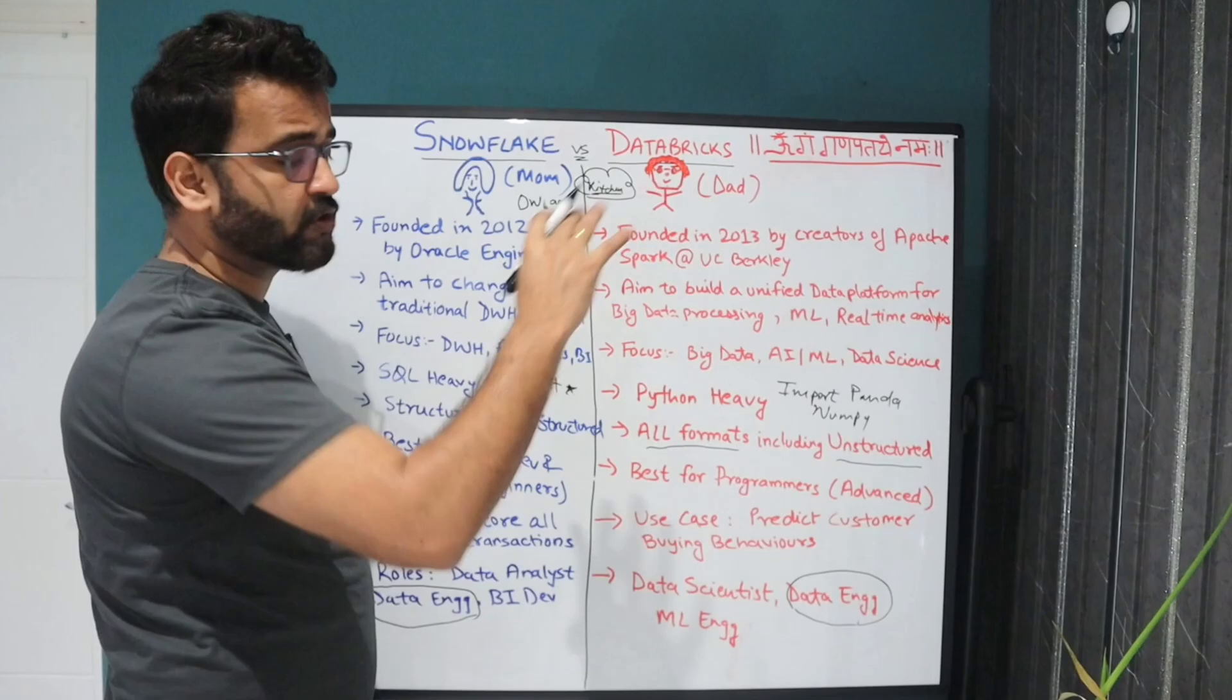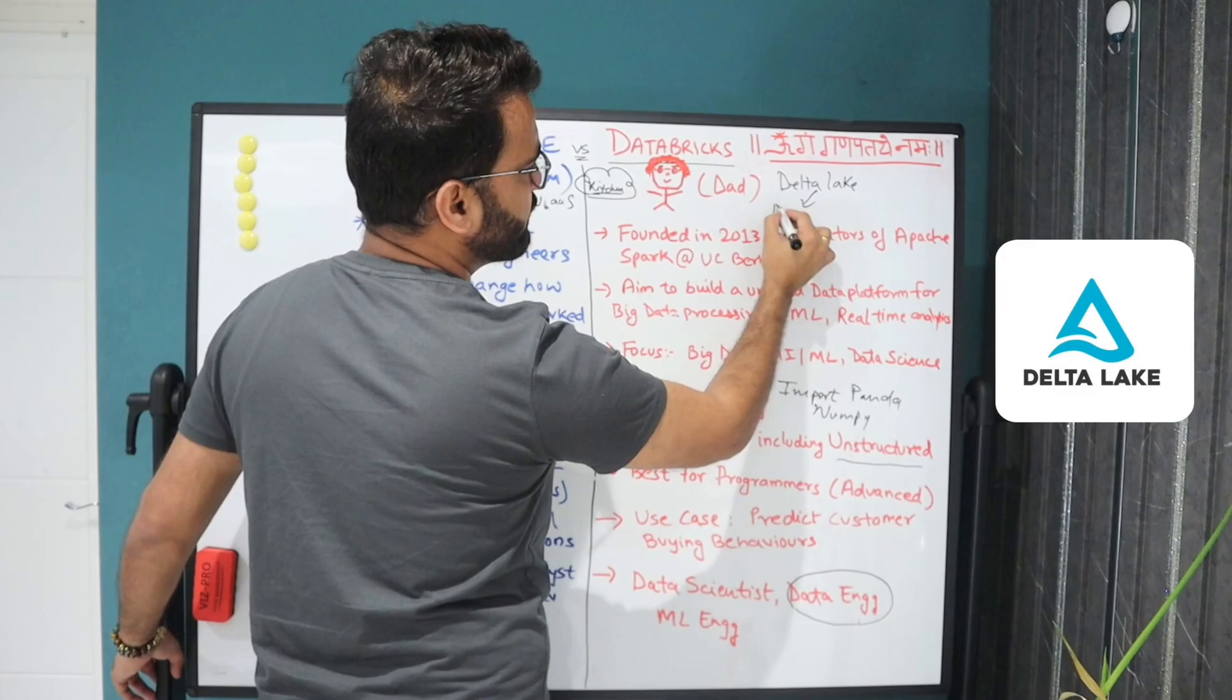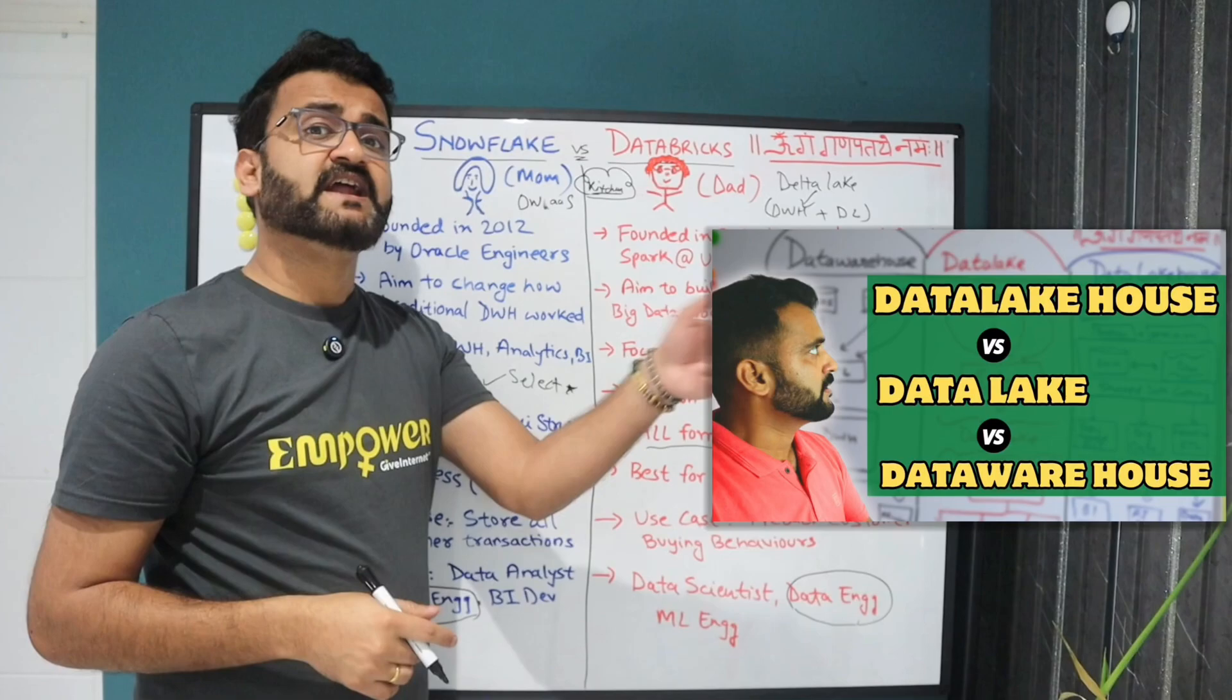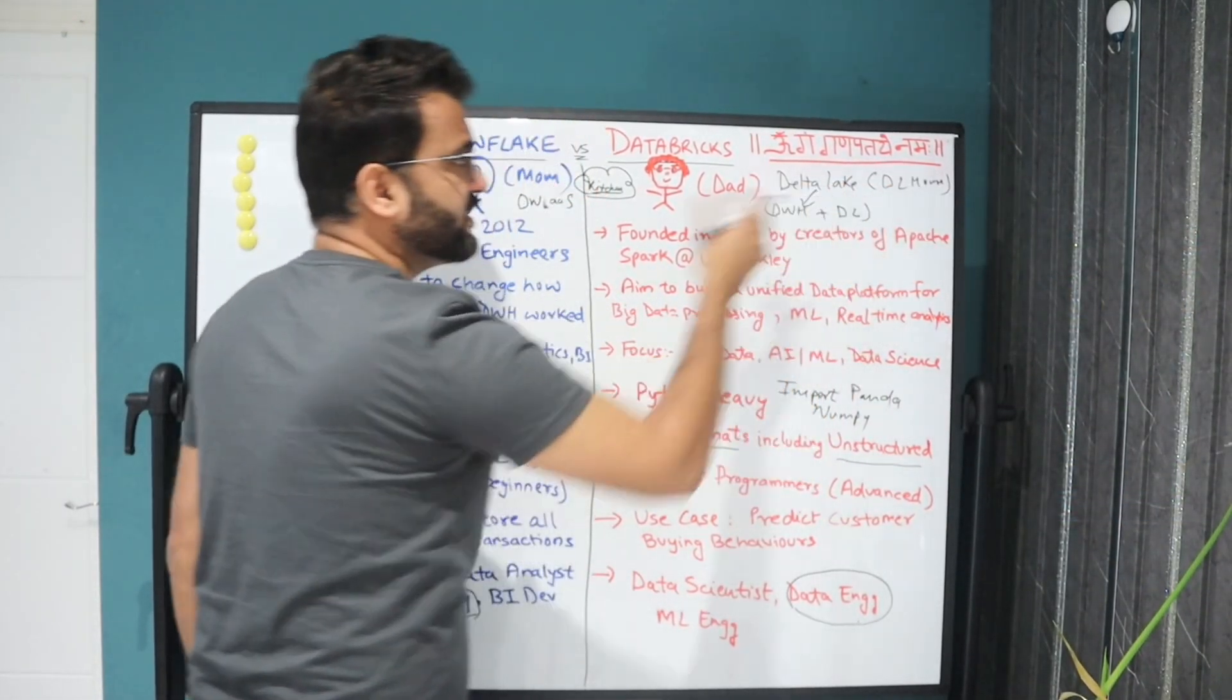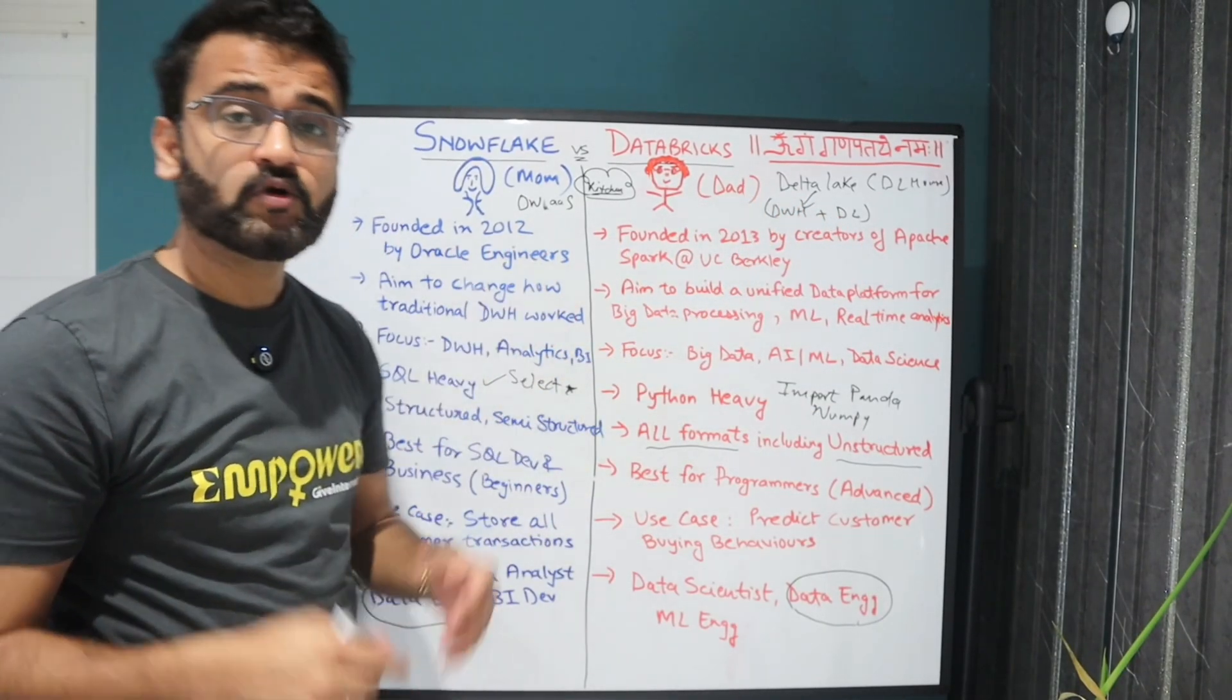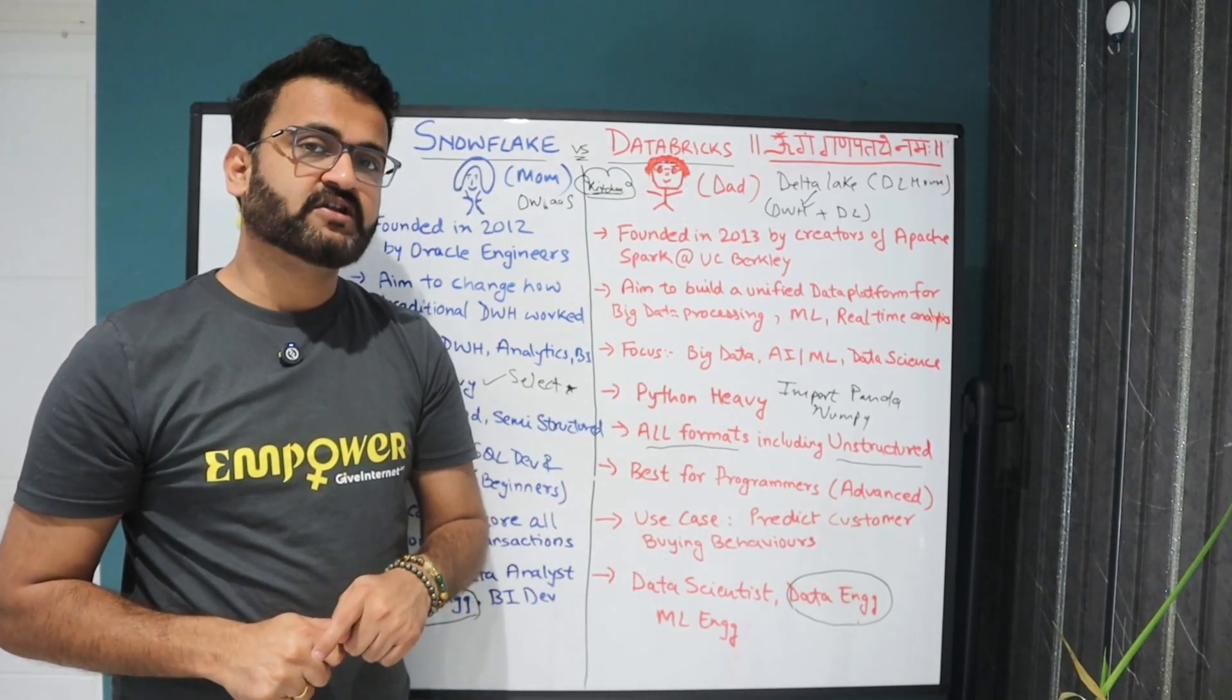And again Databricks is a combination of multiple things. So you have the concept of Delta Lake. Delta Lake is nothing but the combination of standard data warehouse plus data lake. There's a video where I have talked about the difference between data warehouse, data lake and data lakehouse. So Delta Lake is nothing but a data lakehouse. So basically it brings best of both the worlds. So these kinds of products are there in Databricks. So yeah these are certain differences. I know by the end of this video now you have a fair understanding of what is Snowflake, what is Databricks and which particular platform you should start your journey with.